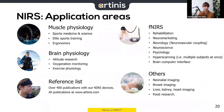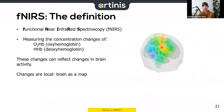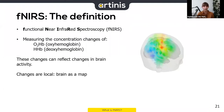fNIRS stands for functional near infrared spectroscopy. We're still measuring the concentration changes of oxy- and deoxyhemoglobin, but now we're looking at whether those changes reflect changes in brain activity. These changes are most likely local, so you use multiple channels in one brain area, and the activation you're looking for would appear in a few of those channels.